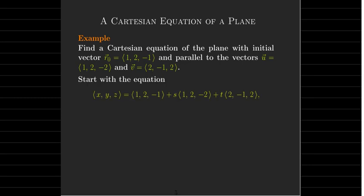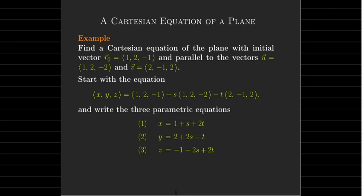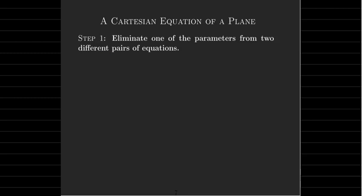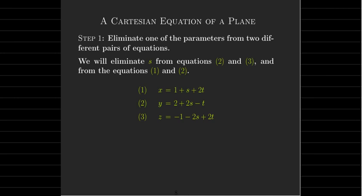Starting with the vector equation, I can get three parametric equations by setting the corresponding components equal to each other. The idea is to eliminate one of the parameters from two different pairs of equations. We'll eliminate S first from equations 2 and 3, because equation 2 has positive 2S and equation 3 has negative 2S — so adding those two together, the S term cancels out. Then we eliminate S from a different pair: equations 1 and 2.